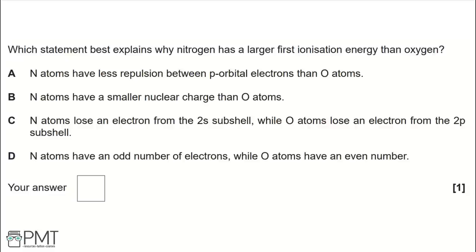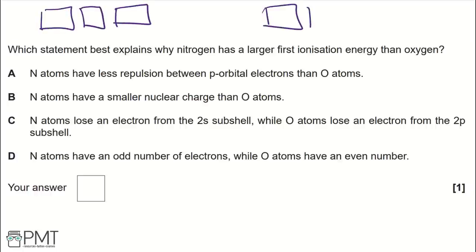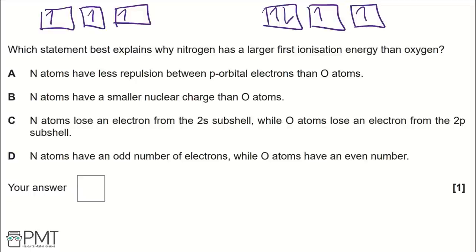For statement A, we draw the p-orbital electron arrangement for nitrogen and oxygen. Nitrogen has one electron spinning up in each of its three p-orbitals. Oxygen has four p electrons, so one orbital has two electrons, creating repulsion between those same-charge electrons. Nitrogen is more stable with less repulsion. Therefore A is correct.